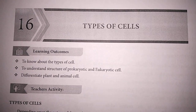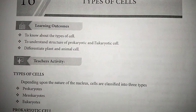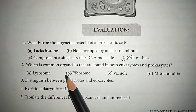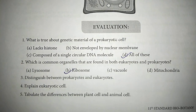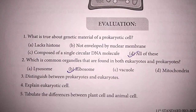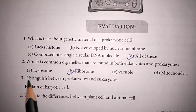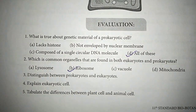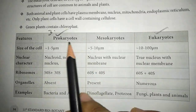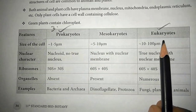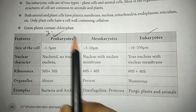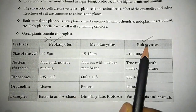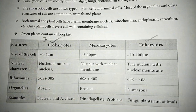Sixth lesson, types of cells. Third question: distinction between prokaryotes and eukaryotes answer. Difference between — this is a two-column table, two by four.